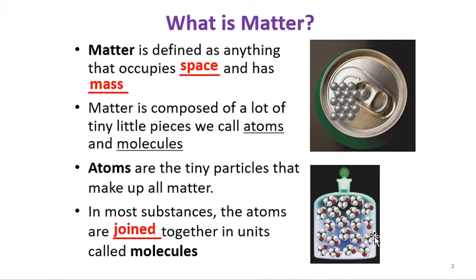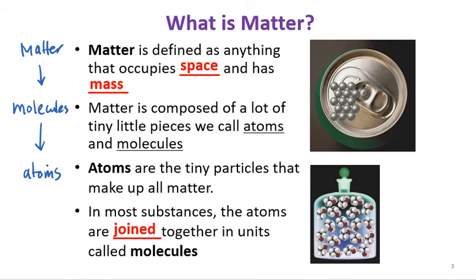Atoms join each other to make molecules. Molecules can be defined as a combination of atoms. So atoms join together to make molecules, and molecules can be called matter as well. We may have different types of molecules joined to each other to form matter. By this relationship: atoms are the building blocks of matter, they have properties of matter, they join together and make molecules, and molecules can have properties of matter.